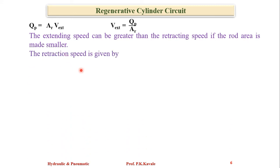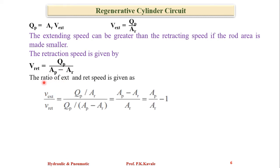There are some practical limitations. What is the retraction velocity? Qp equals (Ap minus Ar) times Vret. Now we will take the ratio of extension speed to retraction speed.